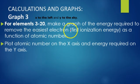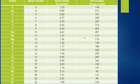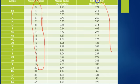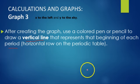For graph number three, you are making a graph of the first ionization energy, once again only for elements 3 through 20. You are plotting atomic number on the x-axis and the energy required on the y-axis. This data is available on Canvas on the sheet you need to download that has the graph paper. Once again, after graphing, you are going to draw a vertical line representing the beginning of each period on the periodic table.